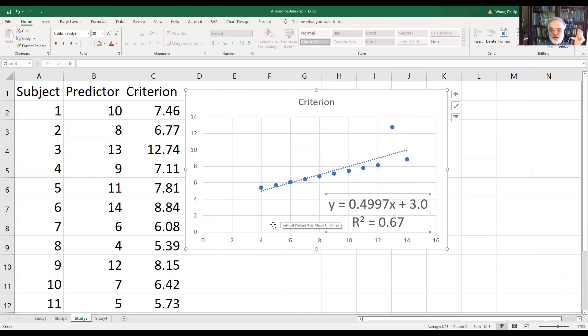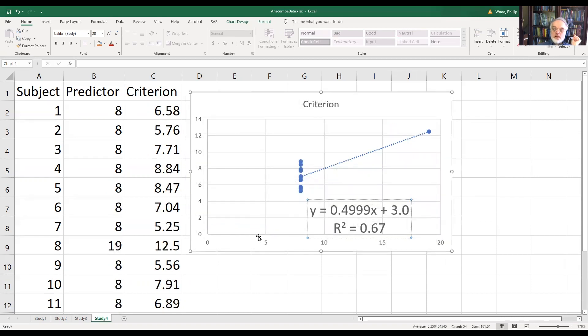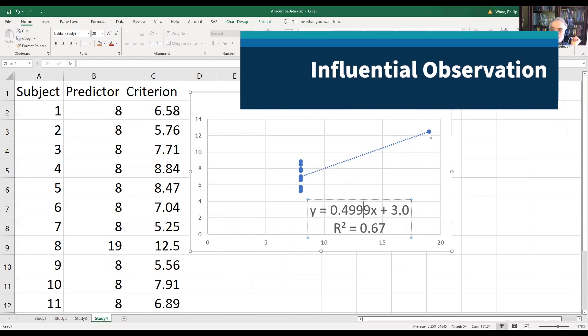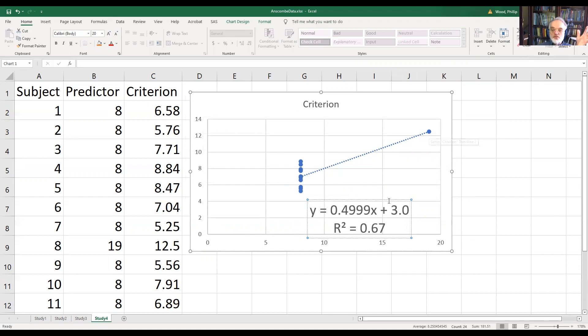An even more dramatic example is the fourth one. Take a look at that. Everybody's down here, and I have this one person who is incredibly influential. This sole person is deciding the regression line and the intercept for us. If this first score moves around a little bit, I'm going to get a lot different number. But notice that the correlation coefficient is the same.